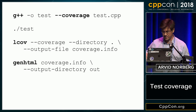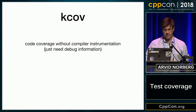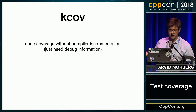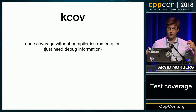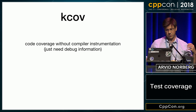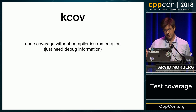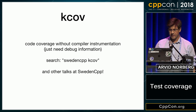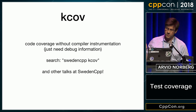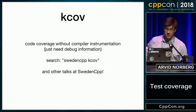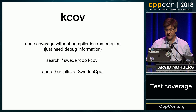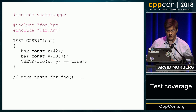You run GenHTML and you get some kind of report. There's also another really cool tool called KCOV. It lets you gather code coverage without actually instrumenting the build — all you need is debug information. The guy who wrote this actually had a presentation recently. Just Google SwedenCBP KCOV and you'll find it, and also other great talks from SwedenCBP.